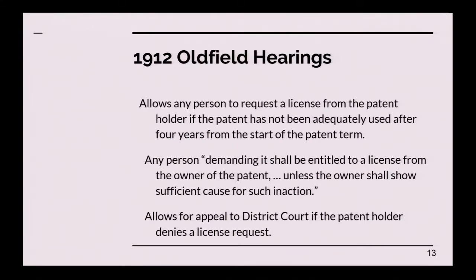The compulsory licensing provision in the bill allowed any person to request a license from the patent holder if the patent had not been adequately used after four years from the start of the patent term. Any person demanding it shall be entitled to a license from the owner unless the owner shall show sufficient cause for such inaction. It allowed appeal to the district court if the patent holder denied a license request, and required the court to grant a license if the reasonable requirements of the public were not being satisfied by reason of neglect or refusal of the patentee to use the invention or grant licenses. It required the setting of just terms.